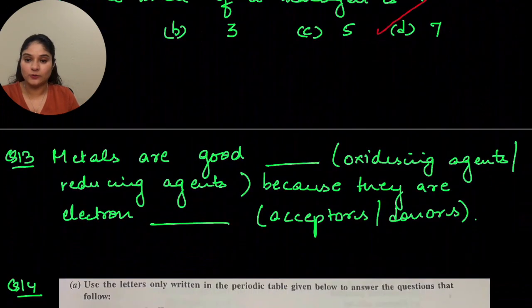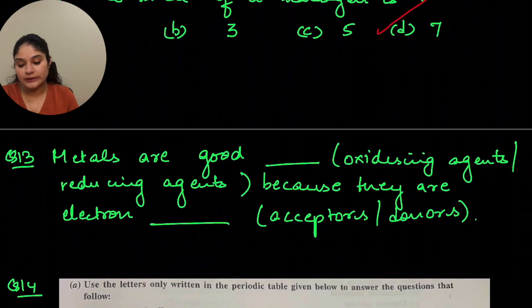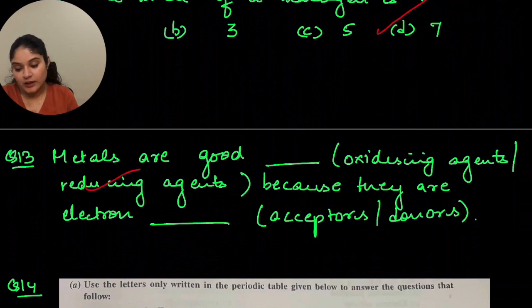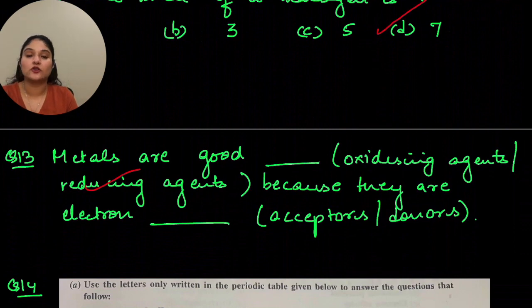Metals are good reducing agents because they are electron donors.